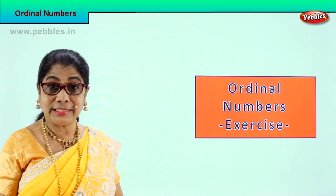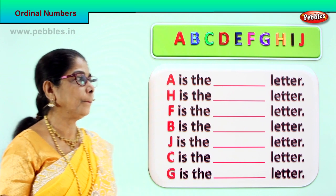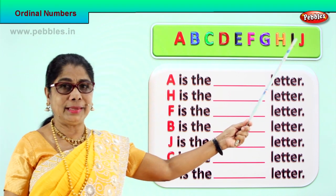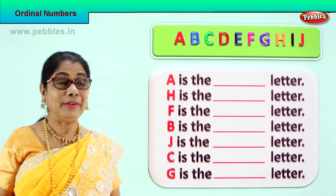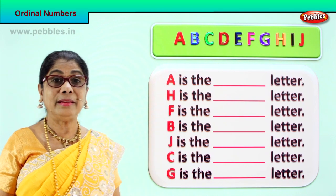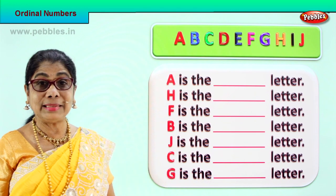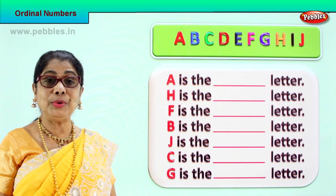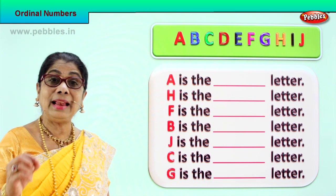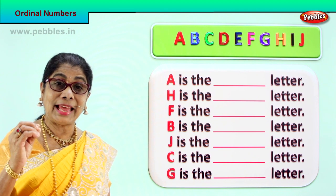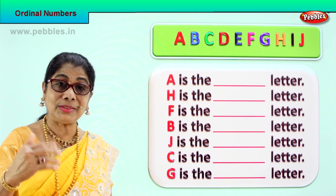Let's look at our first exercise in ordinal numbers. We have some letters here. Look at the first green box. We have all alphabets from A to J arranged, and each letter has a place. Now we are going to look at each alphabet letter and see what place it takes — is it the first, or the sixth, or the tenth?